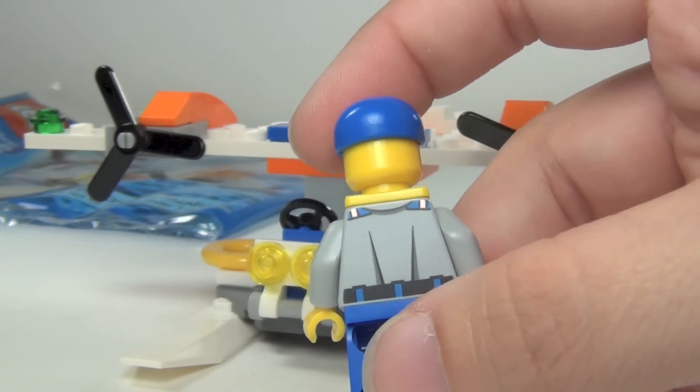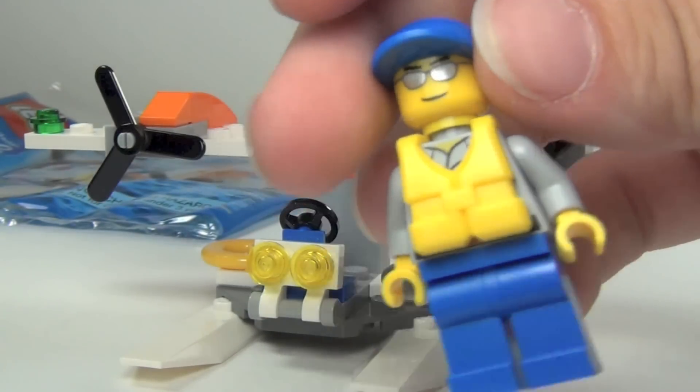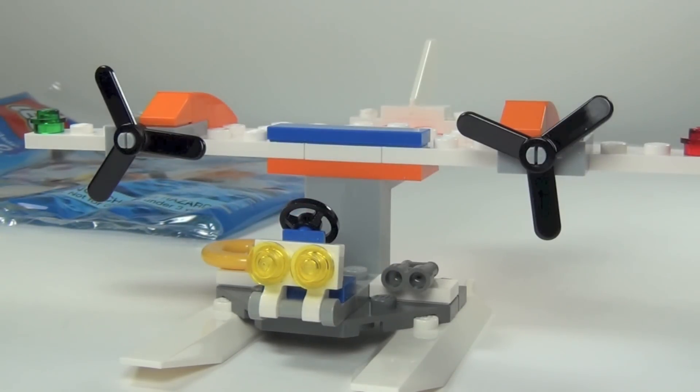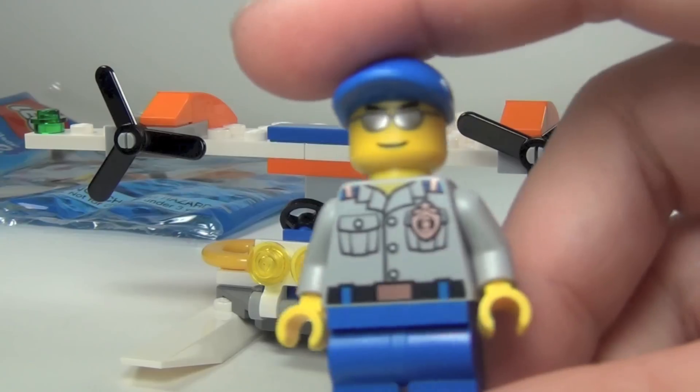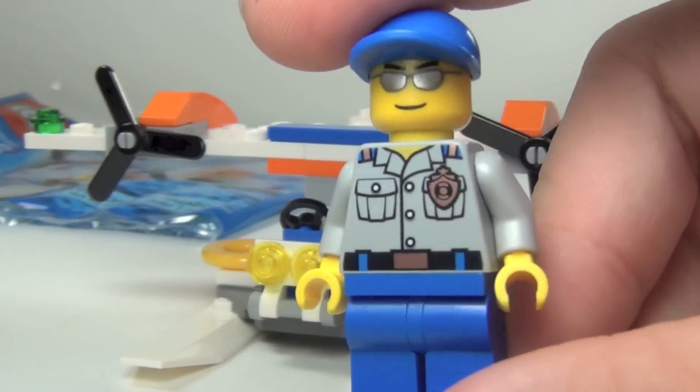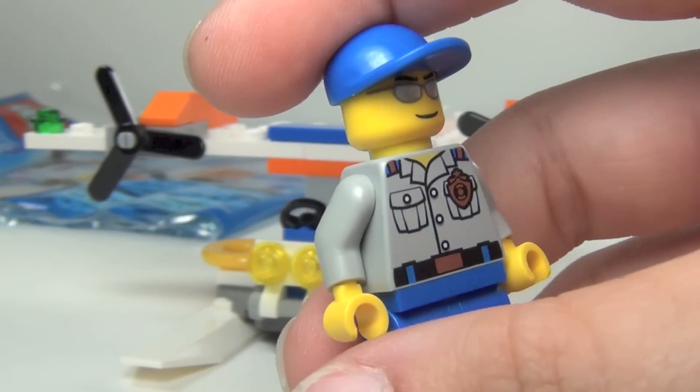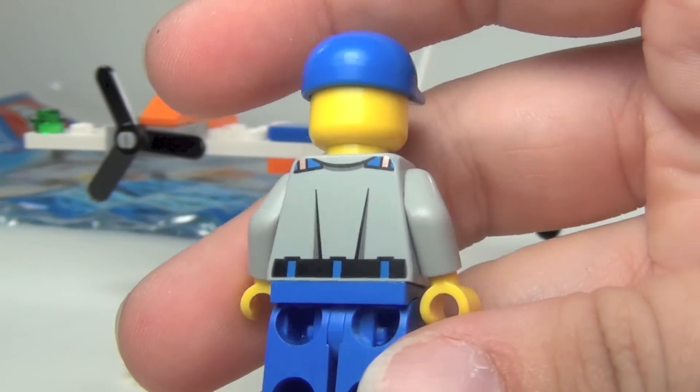And there's the back. And I'll go ahead and take the life jacket off so you can see what the torso looks like underneath. Because it is pretty detailed and I do like the look of it. So, very cool in my opinion. Especially for a polybag.